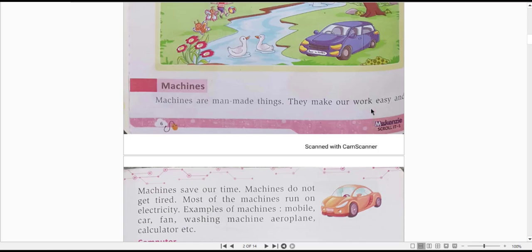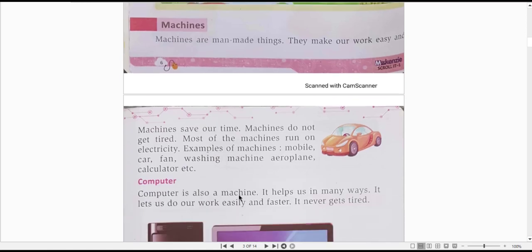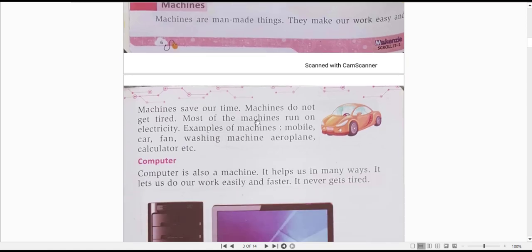Machines save our time. Machine ki speed human beings se jyada hooti hai toh woh is kaam ko jaldi kar lete hai. Machine do not get tired. Most of the machines run on electricity. Examples of machine: mobile, car, fan, washing machine, aeroplane, calculator, etc. Toh ye sabhi machine ke example hai.